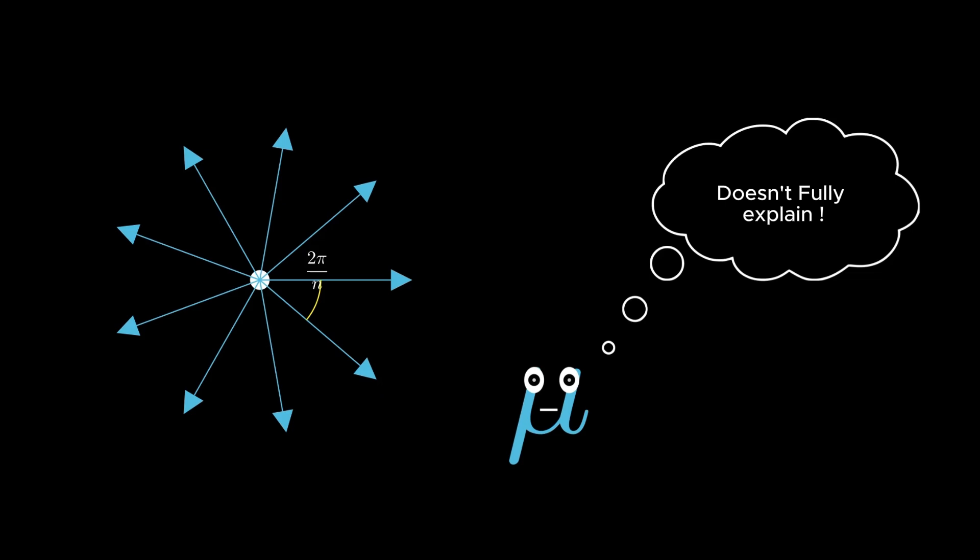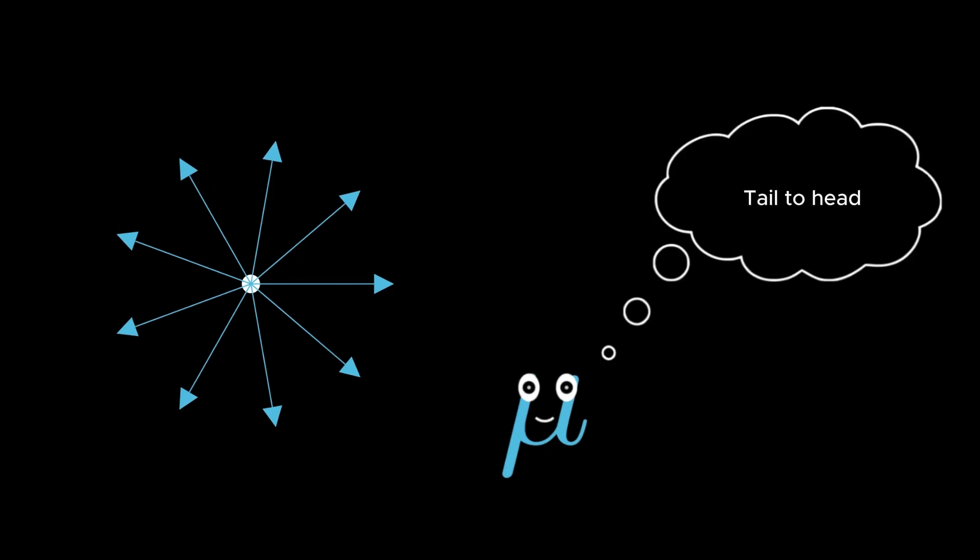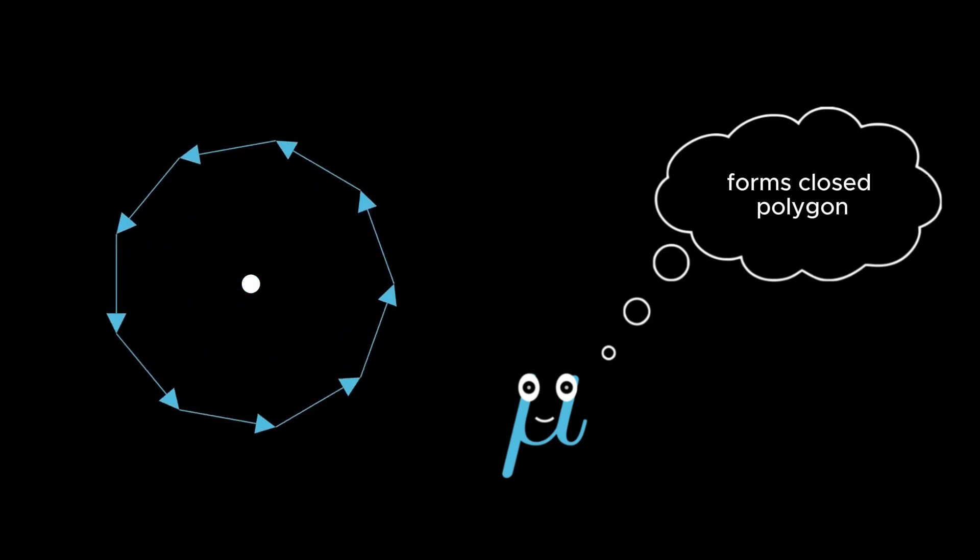One way to get a better grasp of this is by picturing the vectors being shifted without changing their angles, so that the tail of one connects to the head of another. They form a closed polygon, which is why the resulting sum is zero. It's a cool way to visualize the concept, but mathematicians are not quite convinced with this type of visual explanation.